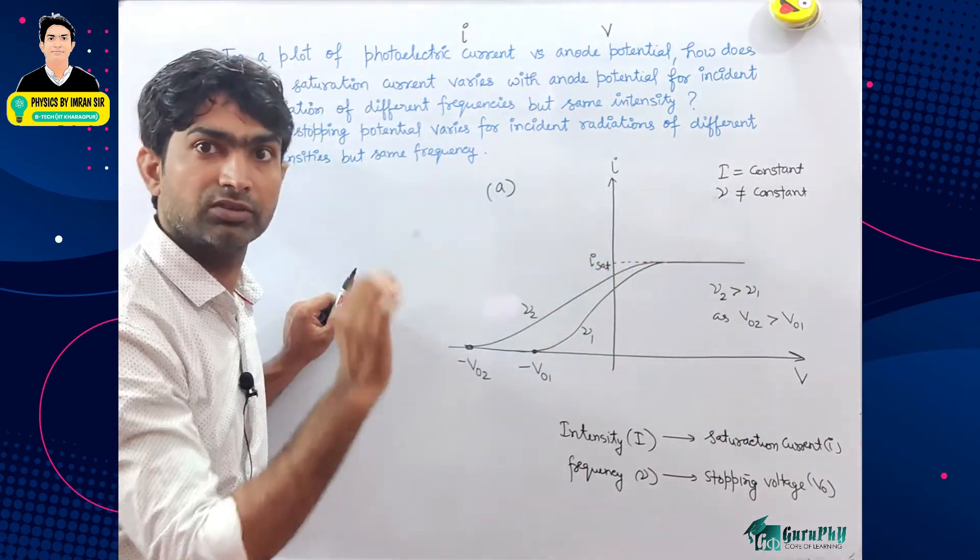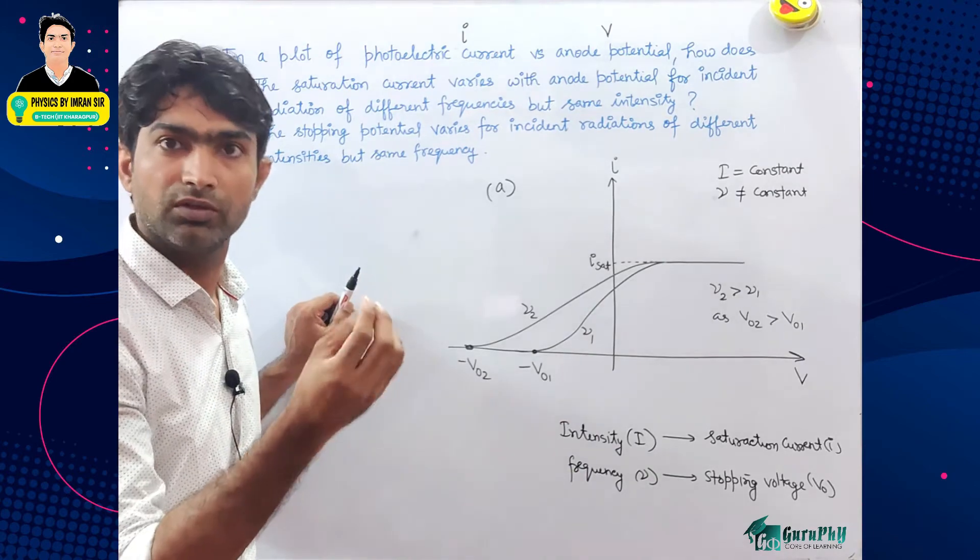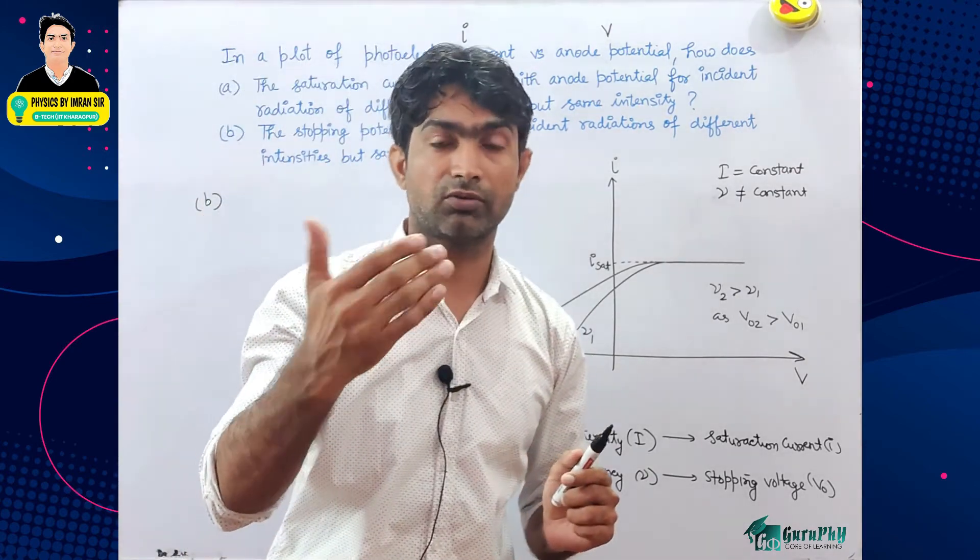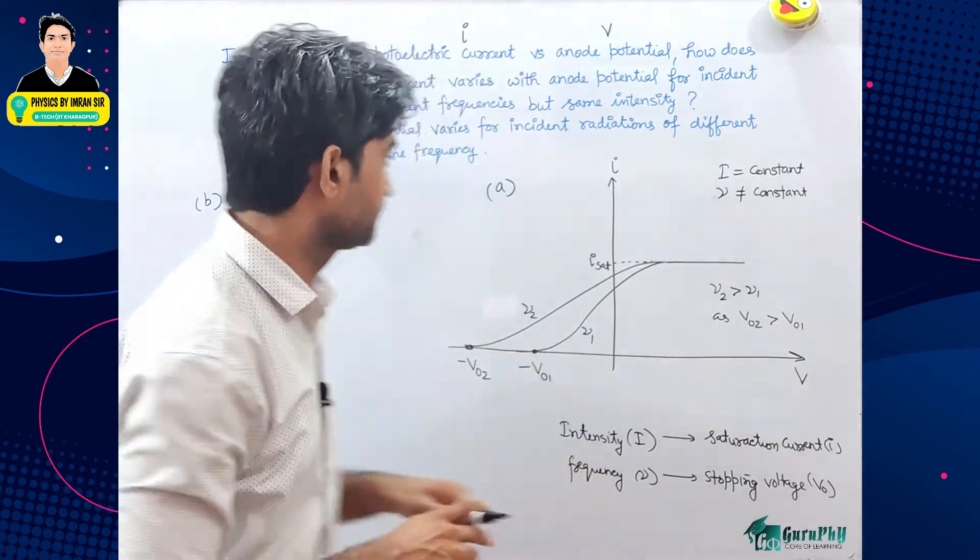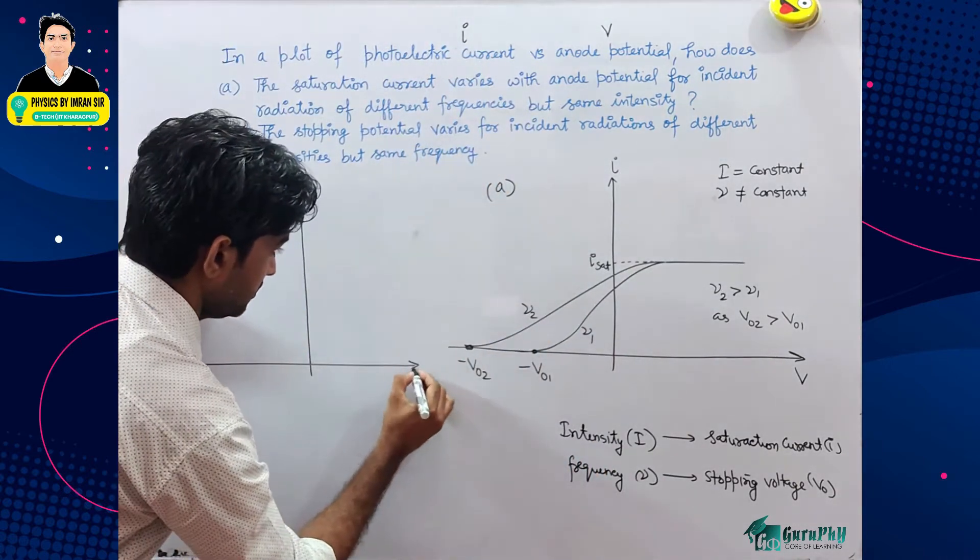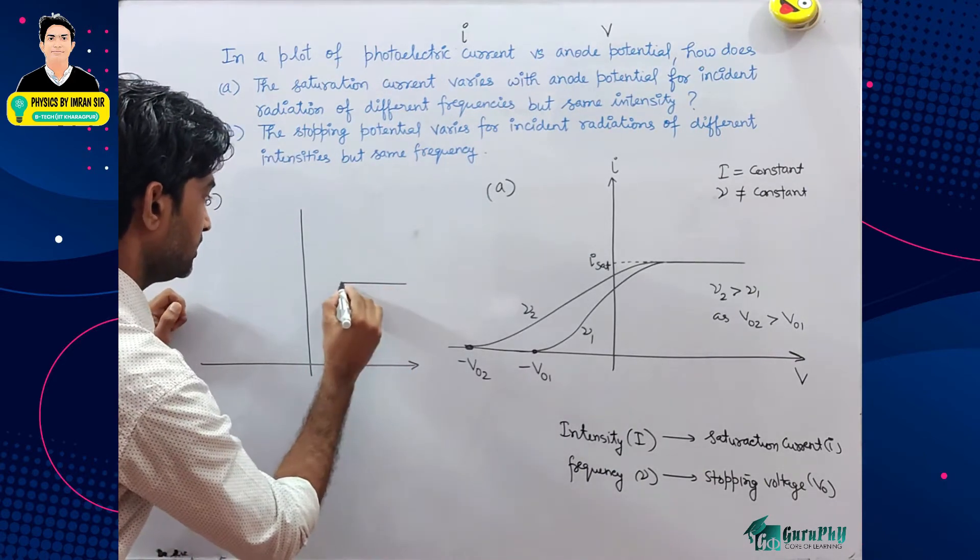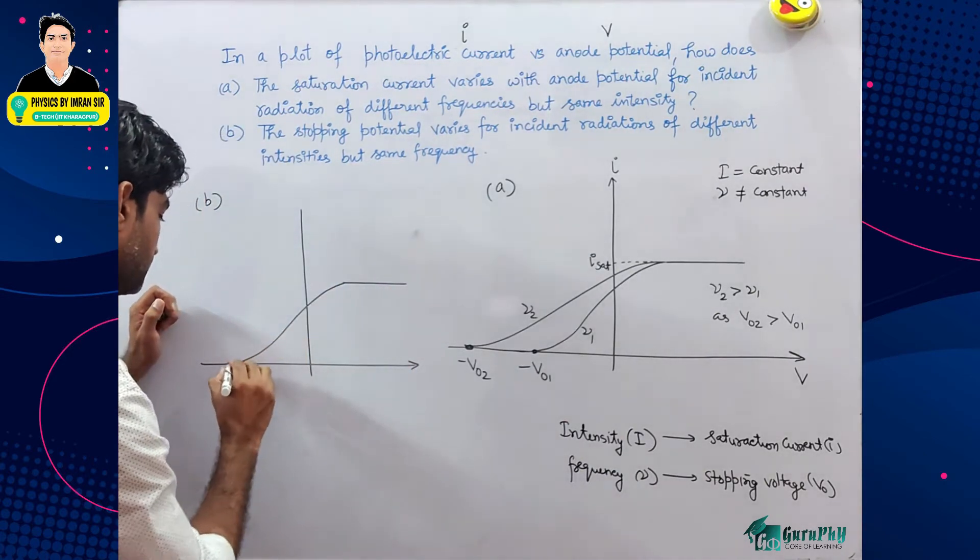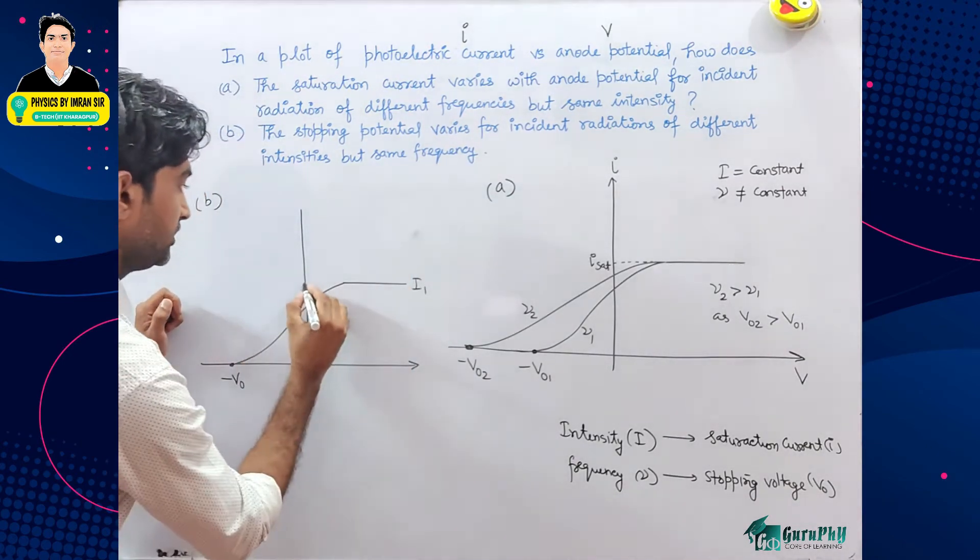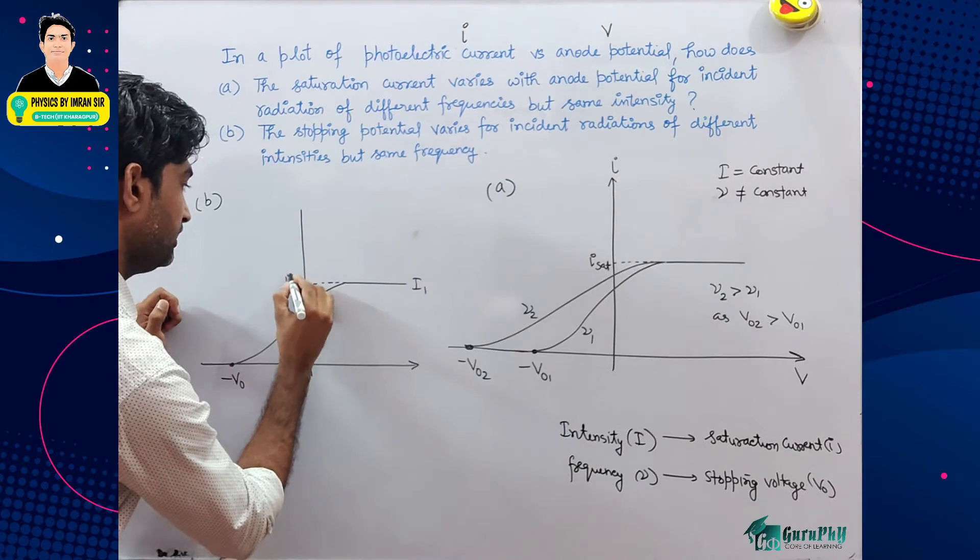Intensity increase to current increase. Intensity means number of photons increase, number of photons means electrons increase, electrons means current increase. So this graph is saturation current and stopping voltage is minus V naught. Suppose intensity is i1, this is saturation current i1.